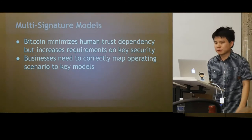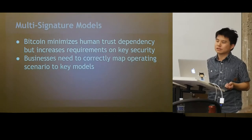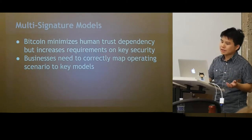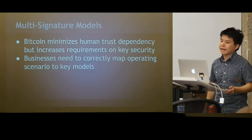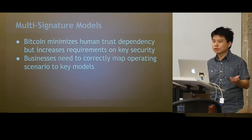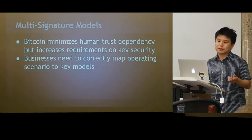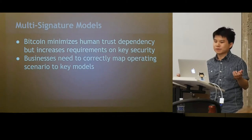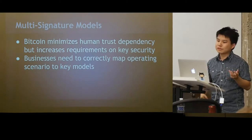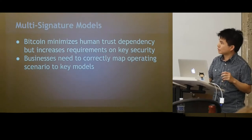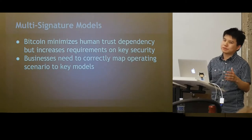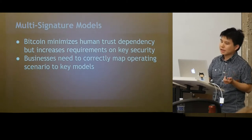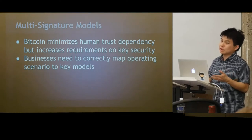In Bitcoin, we minimize the dependency on trusting humans and instead depend on scripts and contracts to secure funds. But when there's a gap between what's happening in the real world and what's modeled in code — for example, a company with multiple directors that should control a joint account but instead uses a single-sig address — problems occur. The operating scenario wasn't properly described in terms of code. So we want to properly design and study the key and security model, looking at multi-sig models from simple ones to emerging ones.